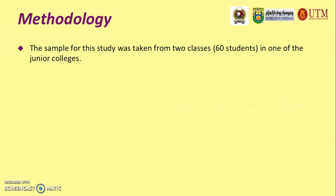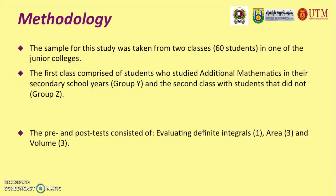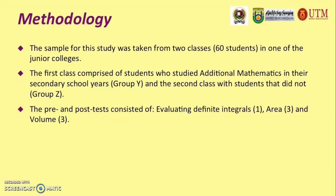The sample for this study was taken from two classes of 60 students in one of the junior colleges in Brunei Darussalam. The first class comprised students who studied additional mathematics in their secondary school years — Group Y — and the second class with students that did not — Group Z. The test instruments, the pre- and post-tests, consisted of one question to evaluate definite integrals, three questions on area, and the last three questions on volume.